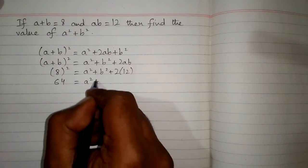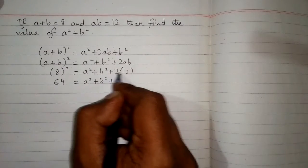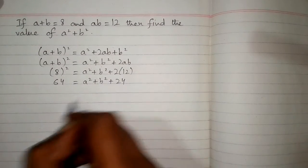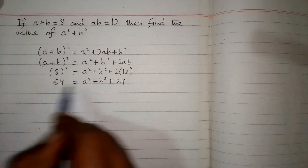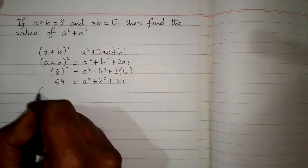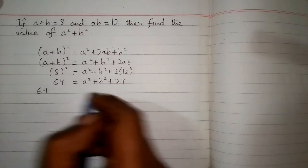and 2 times 12 is 24, we have 64 = a²+b²+24. We can take this 24 to the other side of the equation.